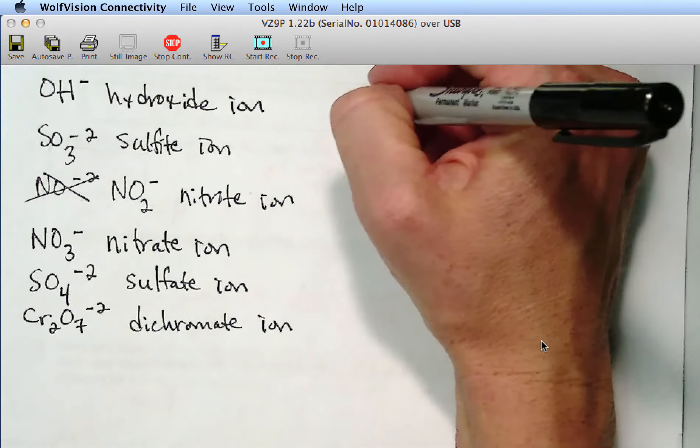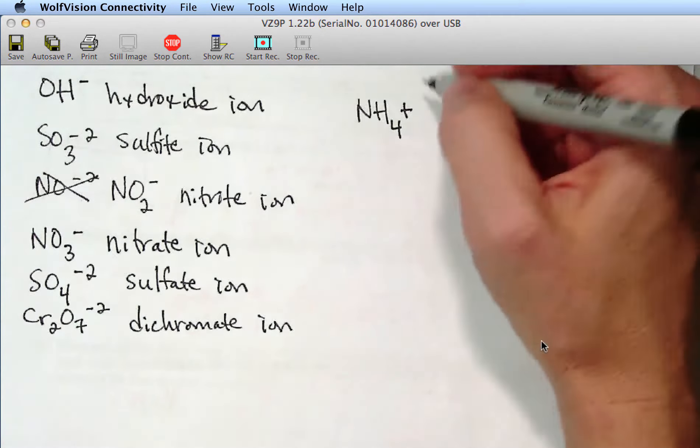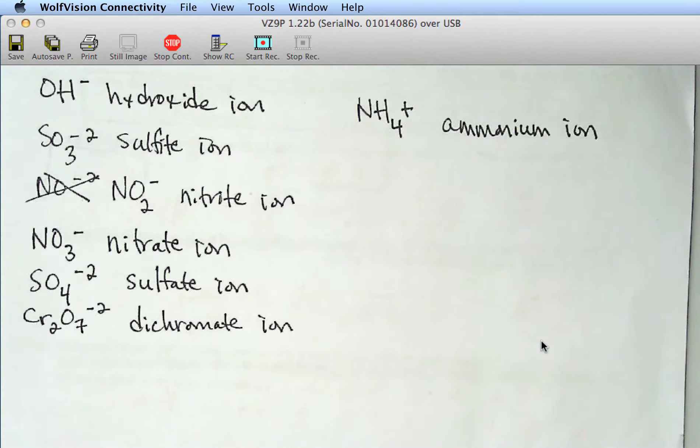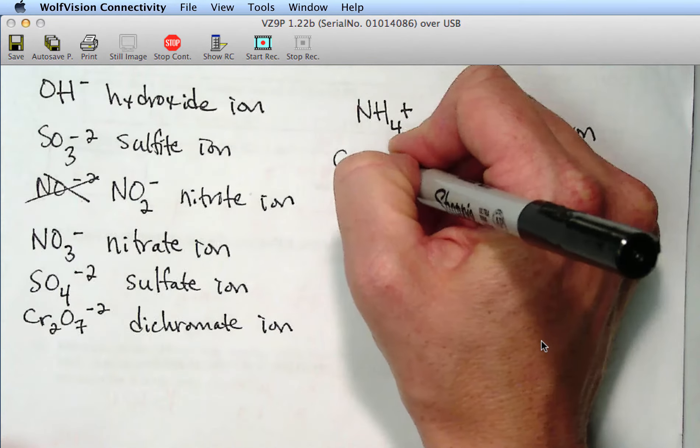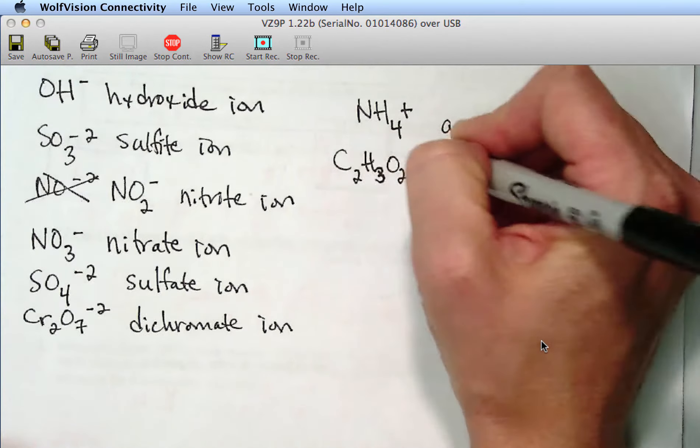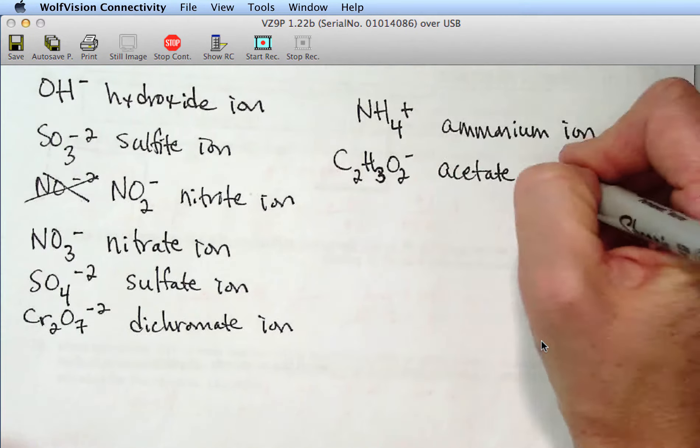What else do we have? Ammonium. Ammonium. NH4. Yes. Ammonium. And you can write out the one, or you can just plus or minus. All right, what else do we have? Acetate. Acetate. C2H3O2 minus, good. Acetate ion.